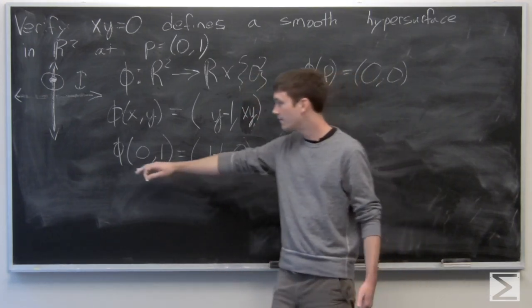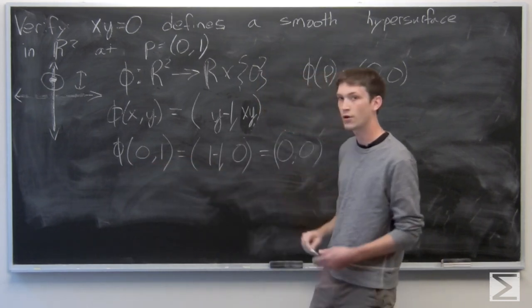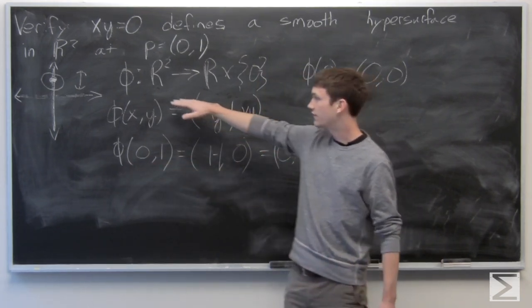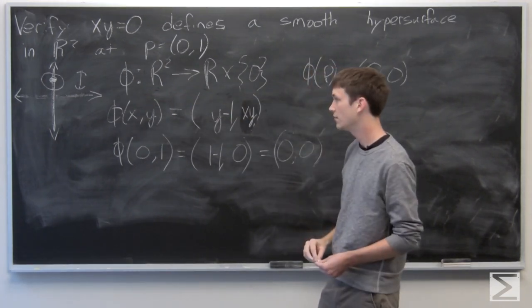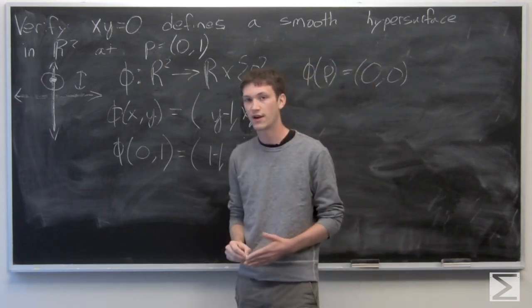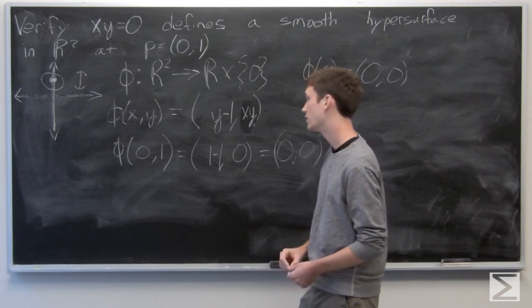So we see now that phi of p is the origin. So we have these first two requirements about our function phi met. And now we want to verify that it's a smooth local change of coordinates.